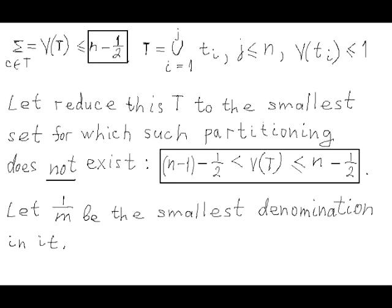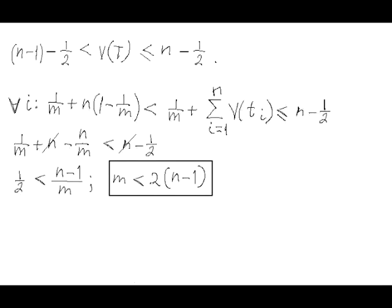Now let's start removing coins for the smallest denomination, and let's keep doing it as long as there is still no partitioning into smaller sets with value not greater than 1. Based on our induction assumption, this last set for which such partitioning does not exist has value greater than n minus 1 minus 1/2. Otherwise, this set would have such partitioning. And let number m be the largest number for which coins with denomination 1 divided by m exists in this set.